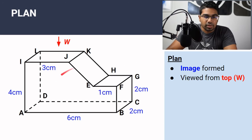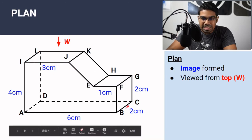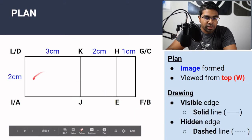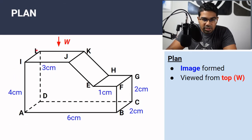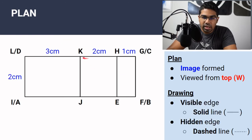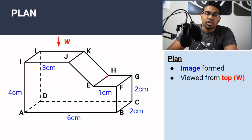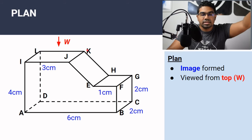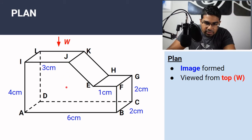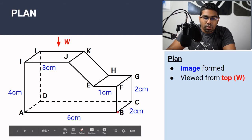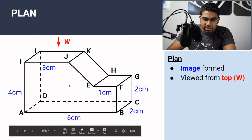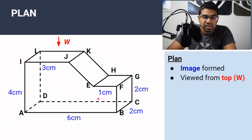And then we have our dimensions as well. The length of IJ is the same as the length of BC, so it is 2 centimetres. We write 2 centimetres here. Then LK is the same length as IJ, so since IJ is 3 centimetres, LK is also 3 centimetres. For KH, we don't take the length of the slope — we take the length as if it was on a single flat plane. Since this is 3 centimetres and this is 1 centimetre, the whole thing is 6 centimetres, so the remainder is 6 minus 3 minus 1, which is 2 centimetres.